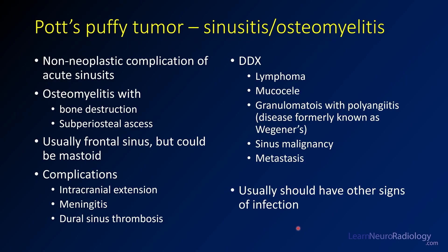For this case, we're looking at Pott's puffy tumor, which is an aggressive sinusitis and osteomyelitis. This is a non-neoplastic complication of acute sinusitis where you get osteomyelitis and bone destruction. Typically, you get a subperiosteal abscess where the osteomyelitis is eroding through the anterior wall of the frontal sinus. You can also have this in the mastoids, but the classic location is the frontal sinus.